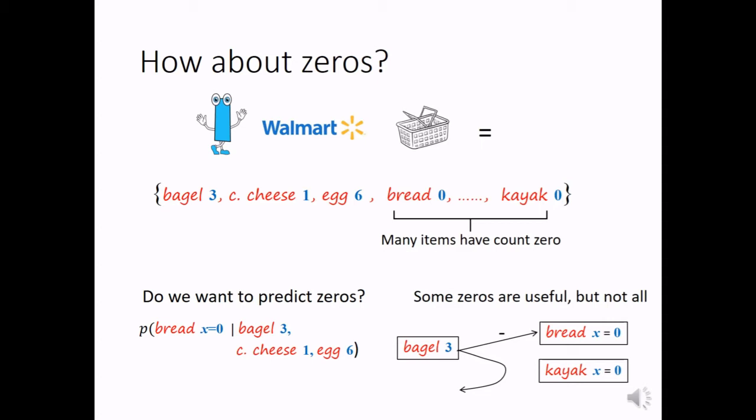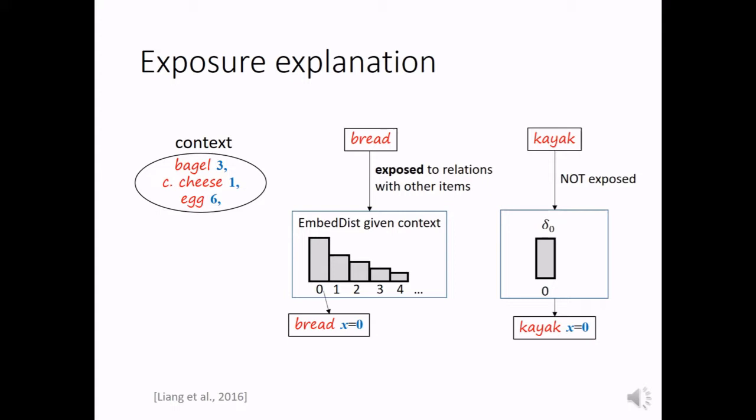The two types of zeros can be explained by the exposure model, which is originally proposed for recommendation systems. The idea is similar here. Given the context, we see the bread is exposed to relations with other items. So we want to use the embedding distribution to capture such relations and fit the zero value for it. But for kayak, we see it is not exposed to relations with other items. So we want to leave these zero entries alone.